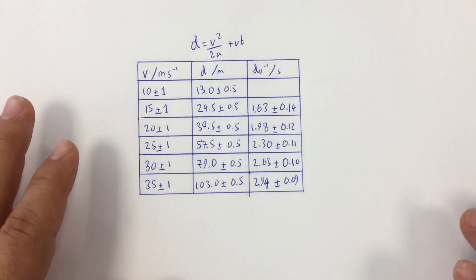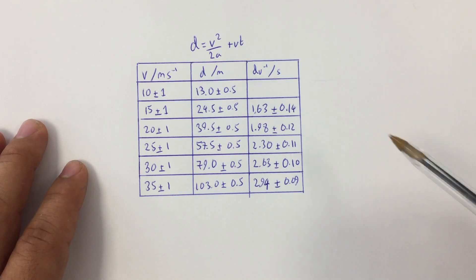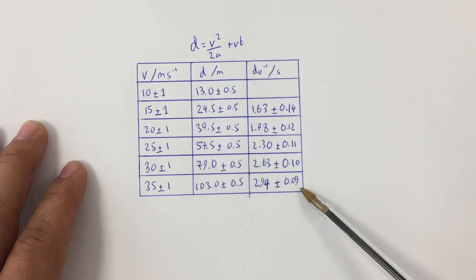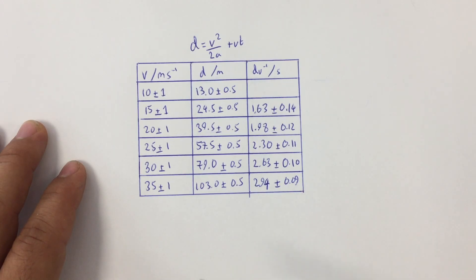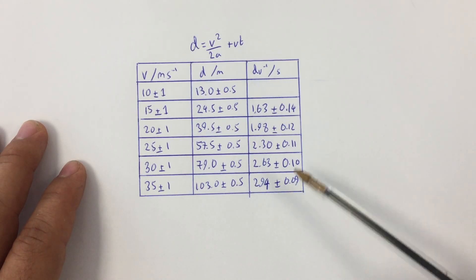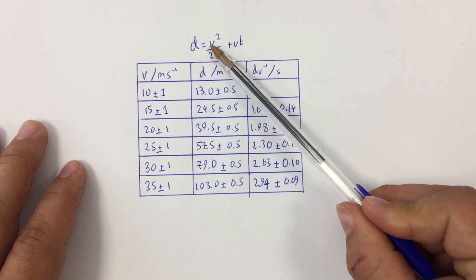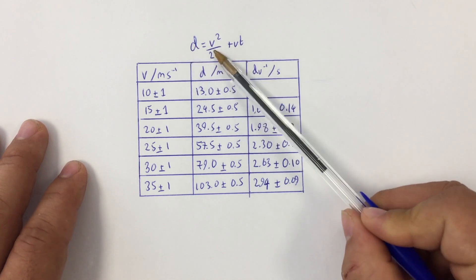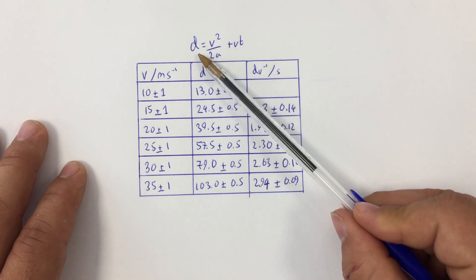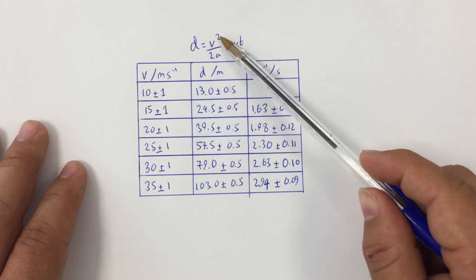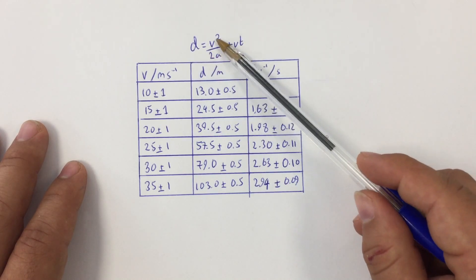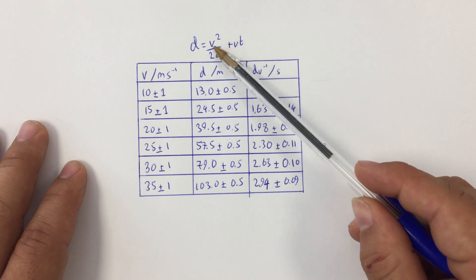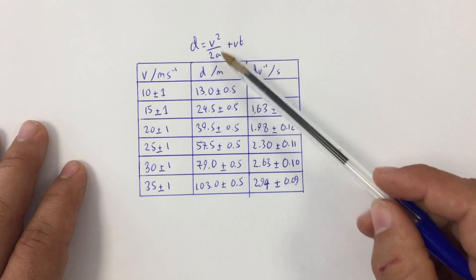This particular data you should recognise because you will have used it in class and you will have tried to analyse it. We have this equation: d is equal to v squared over 2a plus vt. This equation relates to stopping distance. The section v squared over 2a relates to the braking distance, where v is the initial velocity in both cases.